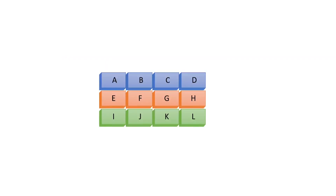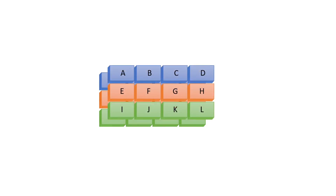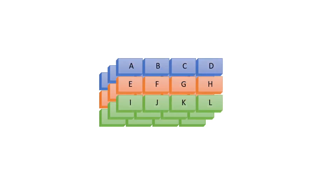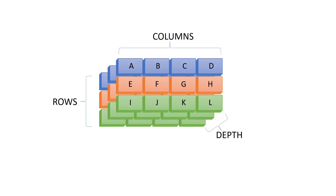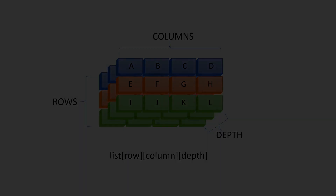If we repeat the same basic principle of nested lists one more time, we get a three-dimensional array with rows, columns, and depth. Because there are three dimensions, we would need three indexes to access every piece of data. This same basic principle can be applied over and over to create an array of any number of dimensions. With this explanation, let's move over to PyCharm and write some code to help understand multi-dimensional arrays in depth.